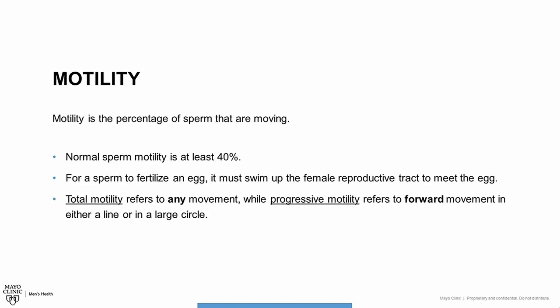Motility. Sperm motility is the amount of sperm that are moving. Normal sperm motility is at least 40%. For a sperm to fertilize an egg, it has to swim up the female reproductive tract to meet the egg. Total motility refers to any movement, while progressive motility refers to forward movement in either a line or in a large circle. Poor sperm motility can be caused by medications, smoking, obesity, diabetes, recent illness, and certain problems with nutrition.